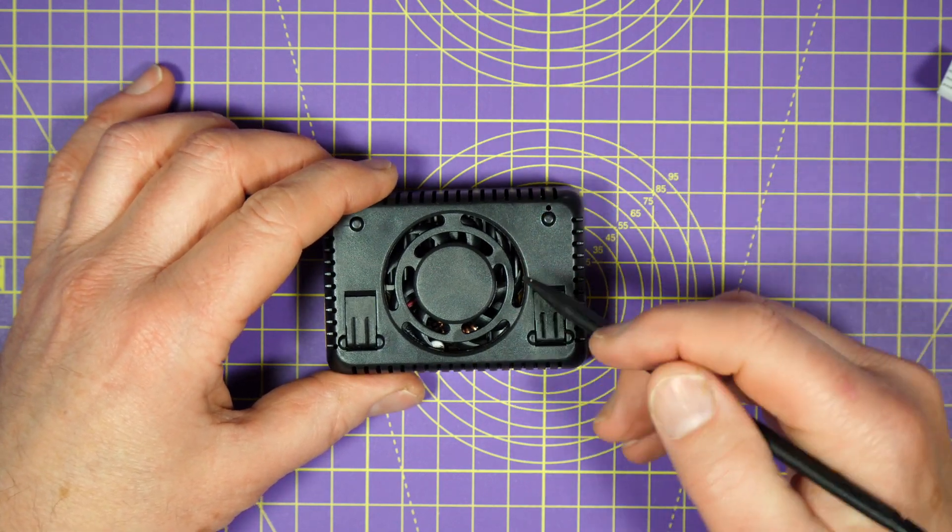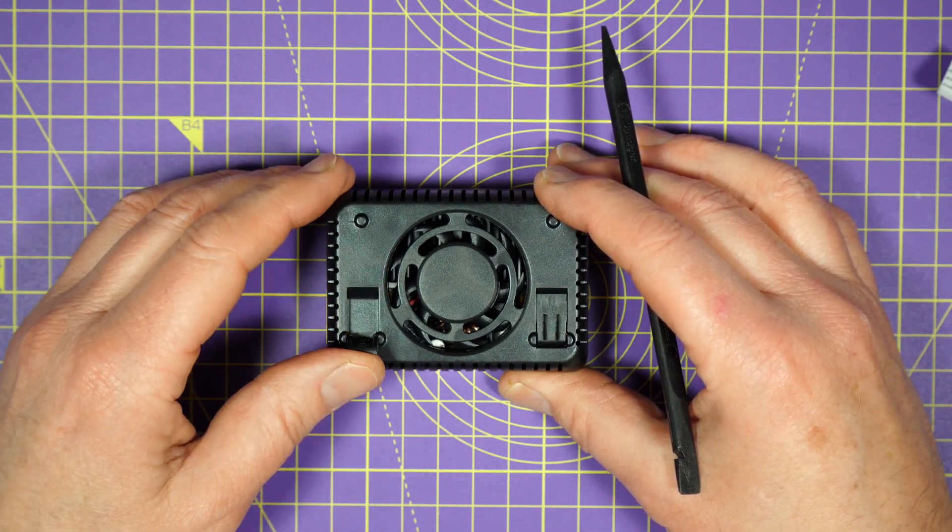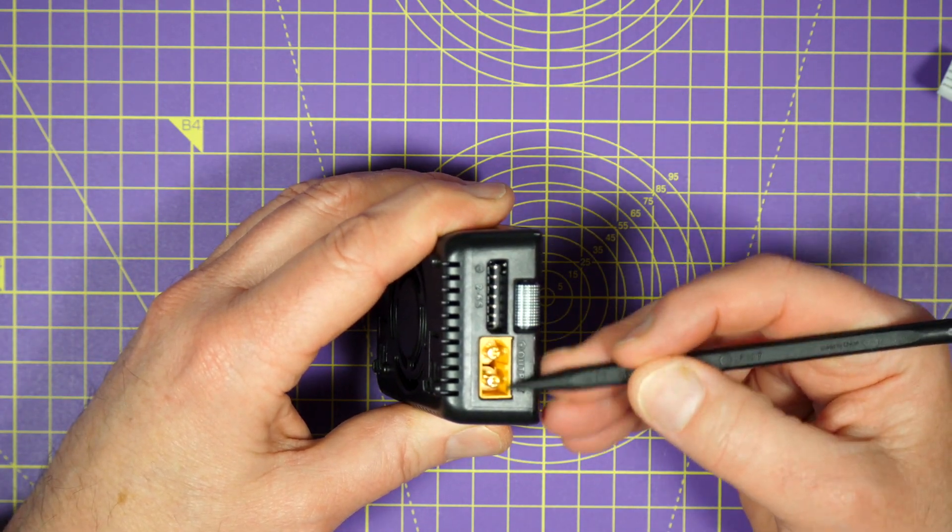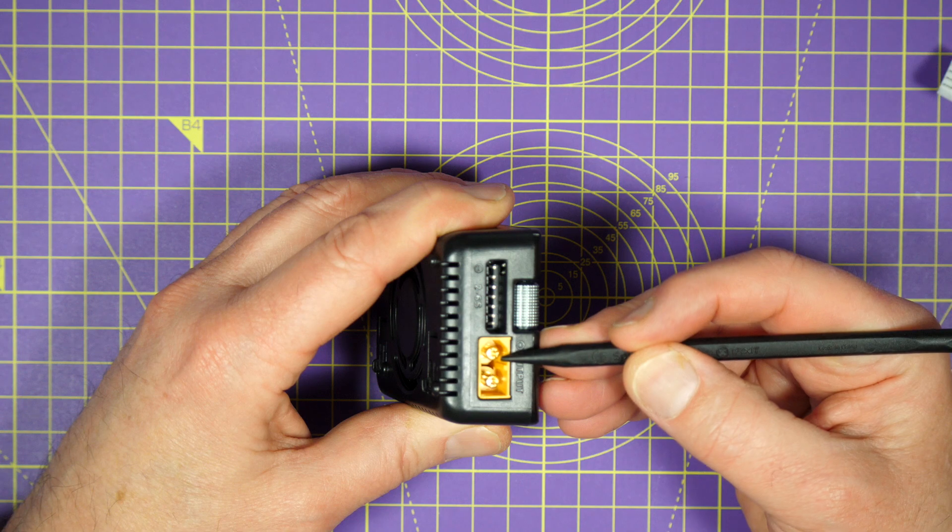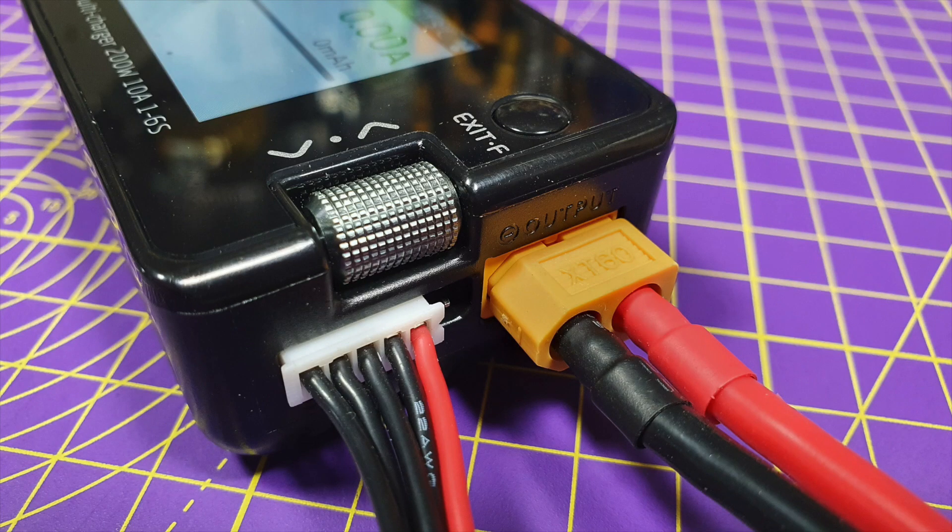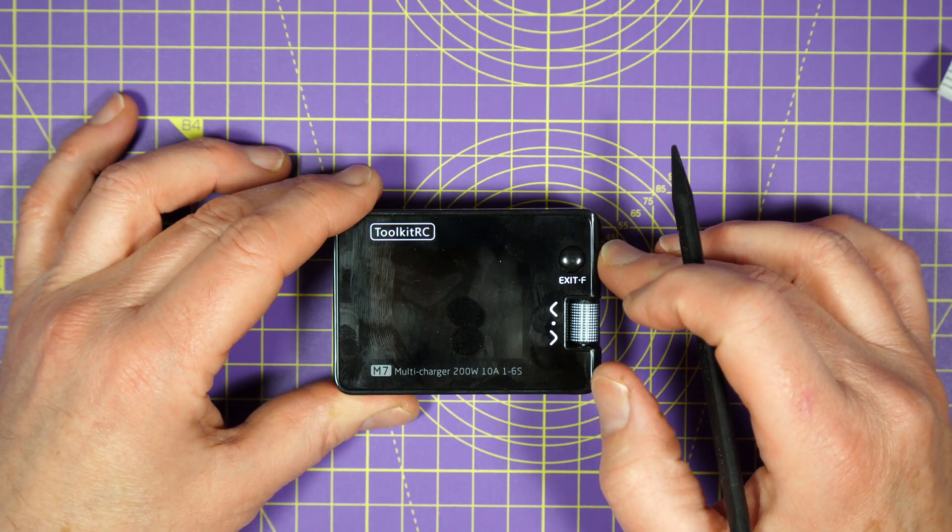On the bottom, there's a fan and you've got some little fold-out tilt legs. And on this side, you've got the main battery port on an XT60 and a 6S balance port. This has got the same balance circuit as the V2 M6 charger and all subsequent Toolkit RC chargers, and that's accurate to 5 microvolts.